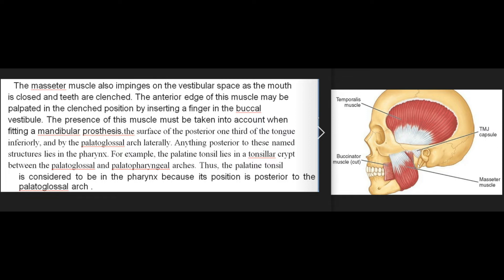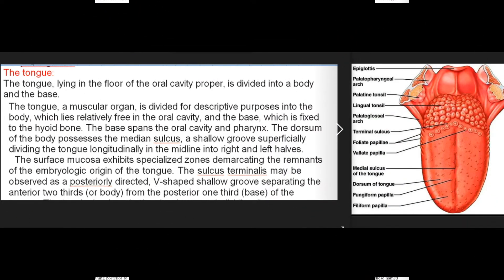The surface of the posterior one-third of the tongue inferiorly and by the palatoglossal arch laterally — anything posterior to these named structures lies in the pharynx. For example, the palatine tonsil lies in a tonsillar crypt between the palatoglossal and palatopharyngeal arches; thus the palatine tonsil is considered to be in the pharynx because its position is posterior to the palatoglossal arch.